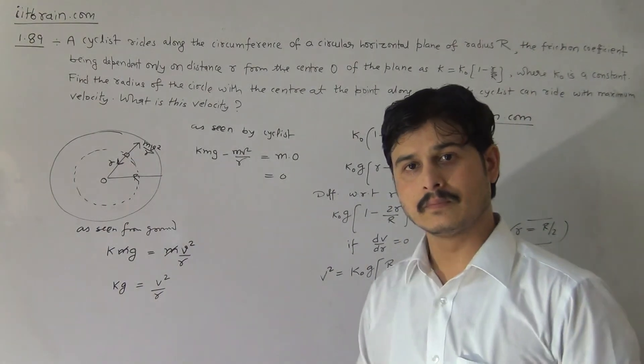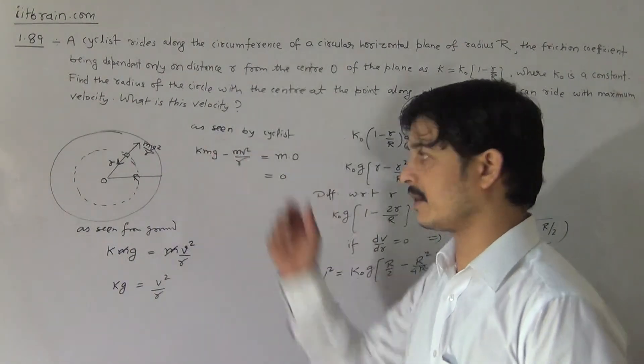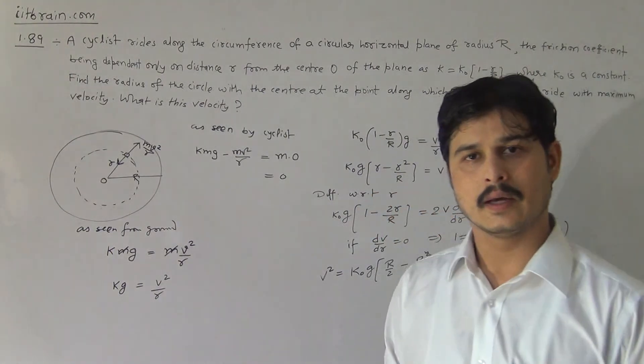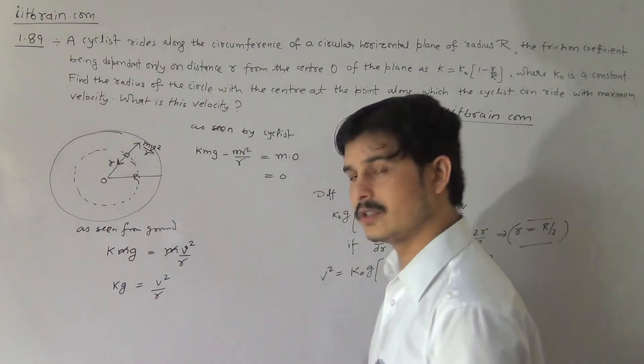And the radius R by two is the plane which is parallel to this plane at which the particle can achieve maximum velocity. So you can understand the problem. Thank you.